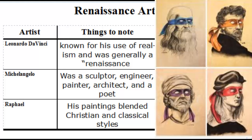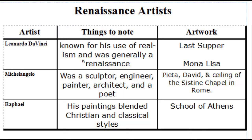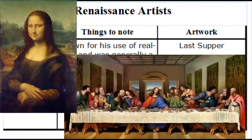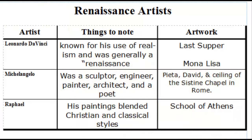Da Vinci is really well known for his use of realism and was generally considered a Renaissance man — meaning he knew a lot and dabbled in a variety of things: art, mathematics, architecture, and science. His two most famous paintings are The Last Supper and The Mona Lisa. The Da Vinci Code movie really focused on using Da Vinci's art as a way to hide a secret code, with Tom Hanks' character running all over Europe trying to track down the mystery.